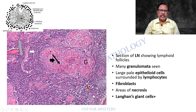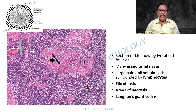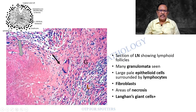Look at this one — there is a peripheral nucleus. The cells are all pale and they are called epithelioid cells. Multiple granulomata, epithelioid cells, lymphocytes — there will be fibroblasts in the periphery, areas of necrosis, and Langhans type of giant cells that I am seeing.